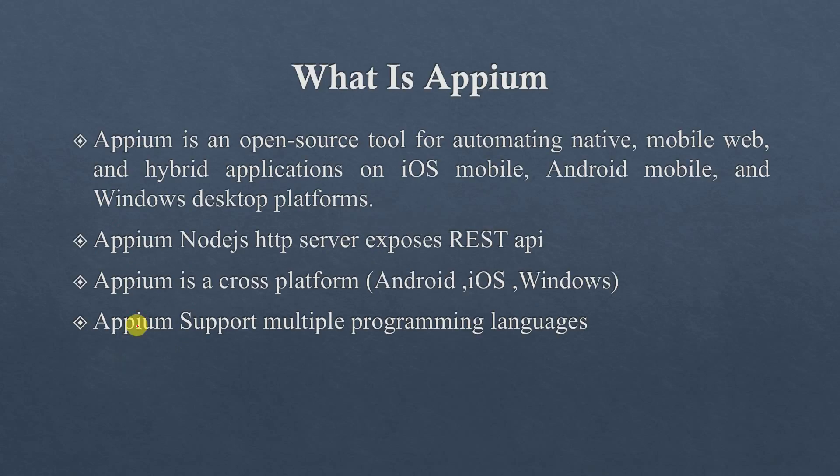Technically, Appium is a Node.js server which exposes some REST APIs. Appium is a free, open source tool which we can use to test any native, mobile web, and hybrid application. It is cross-platform and supports multiple programming languages.